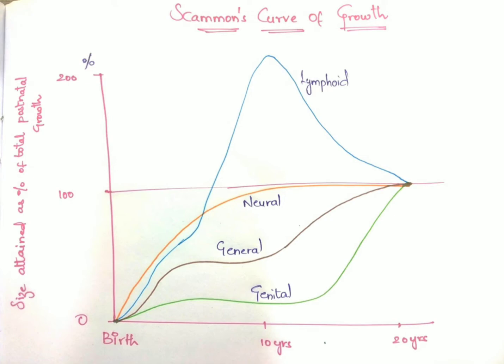Next, we are moving towards the orange line, the neural tissue. The neural tissue is nothing but our brain. This tissue grows very rapidly and almost reaches adult size by the age of six to seven years, attaining 100 percent. Very little growth of the neural tissues occurs after six to seven years of age, as you can see the curve going along the hundred percent line.